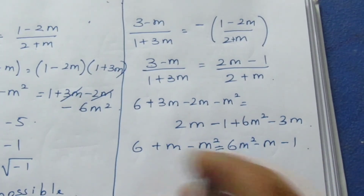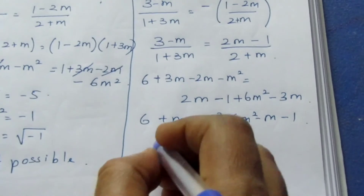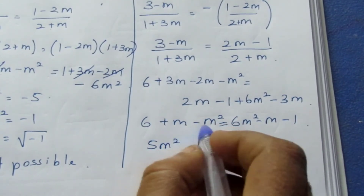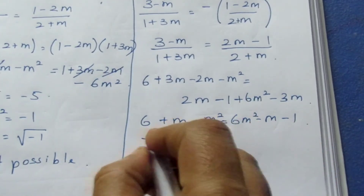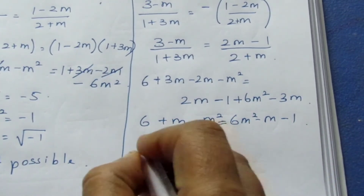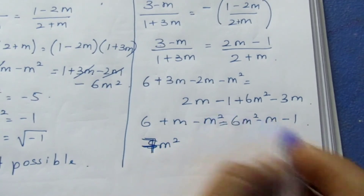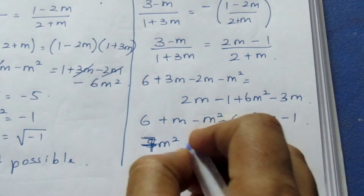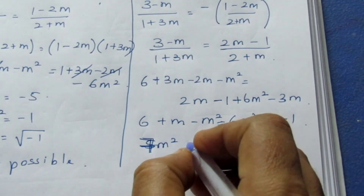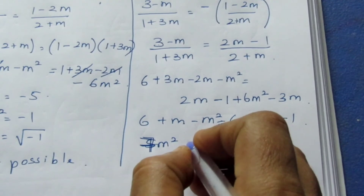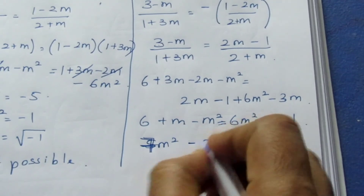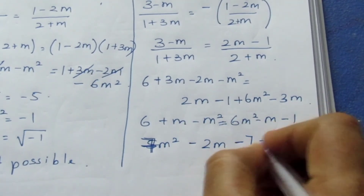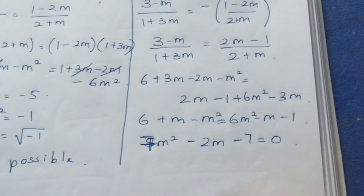Bringing everything to one side: 7m² − 2m − 7 = 0. Since this cannot be factored by splitting the middle term (7 × 7 = 49, which cannot be split to give −2), we use the quadratic formula.